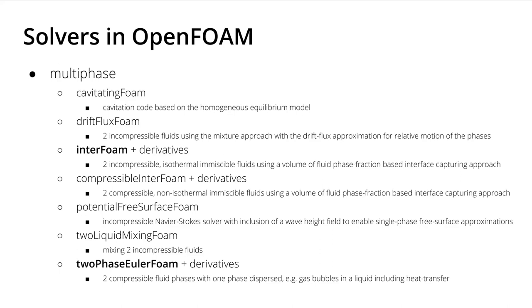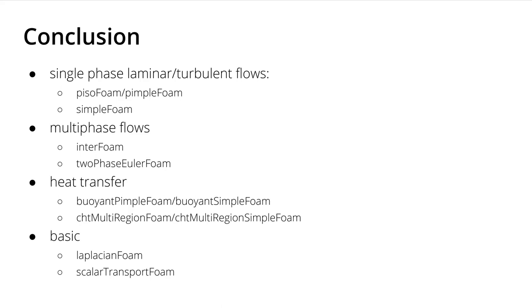In conclusion, coming from the problem side: for single-phase laminar or turbulent flow, you'll most probably go for pisoFoam or pimpleFoam for transient processes, or simpleFoam for steady-state. For multi-phase flows, you'll most likely use interFoam, and in certain cases twoPhaseEulerFoam if interFoam needs too high a resolution. For heat transfer, go for buoyantPimpleFoam or buoyantSimpleFoam. If you also need heat diffusion in solids and fluid-solid heat transfer, use chtMultiRegionFoam or its steady-state version.